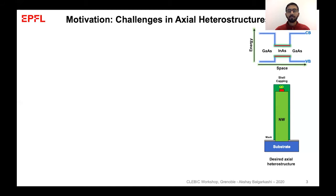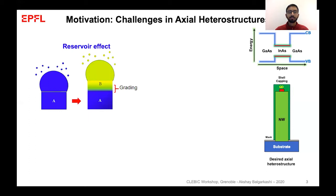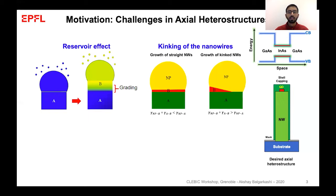While growing axial heterostructures, there are two different challenges. Mainly, there is a reservoir effect which leads to grading in the composition when switching from material A to material B. In the second case, there is nanowire kinking, where the growth direction changes because of differences in surface energies.